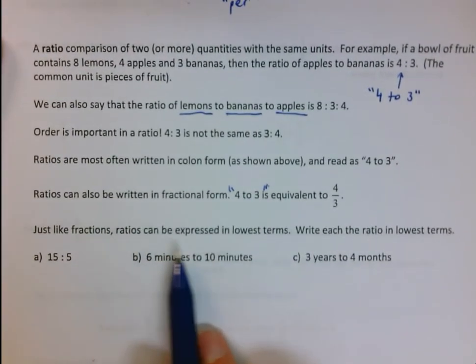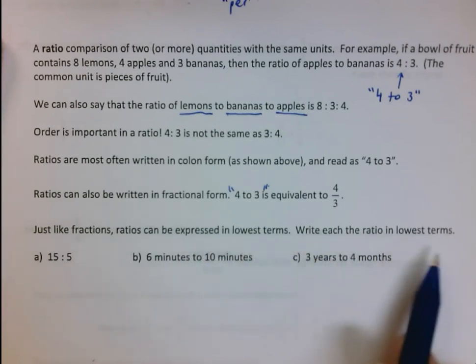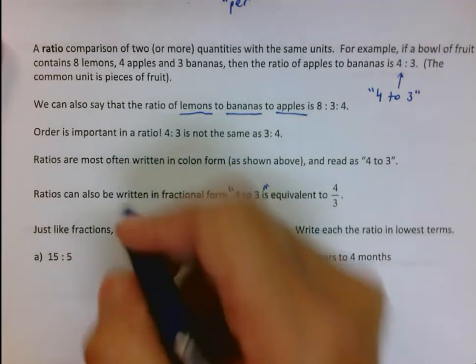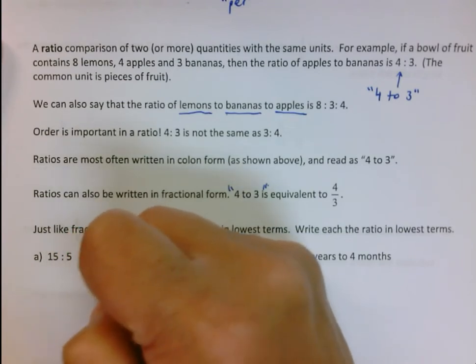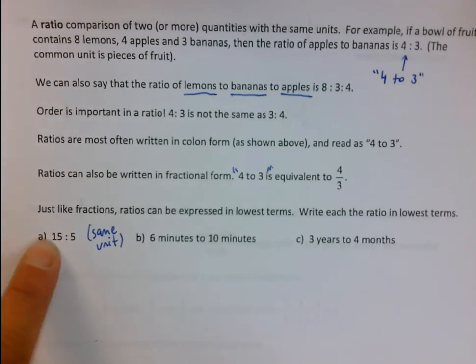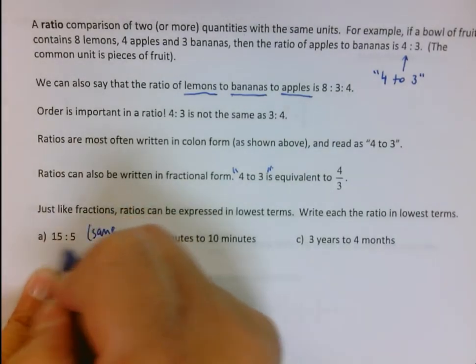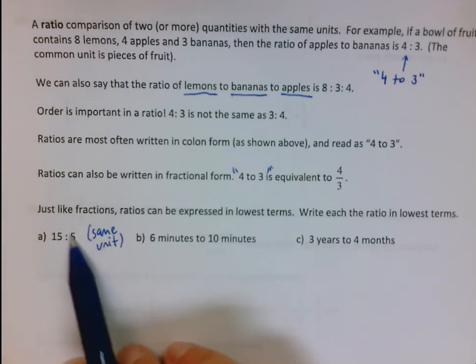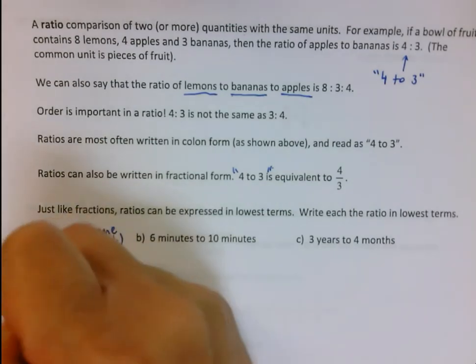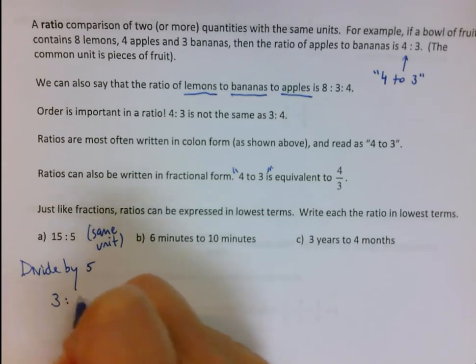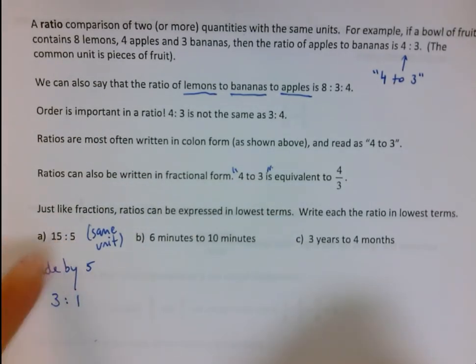Just like fractions, ratios can be expressed in lowest terms. Write each ratio in lowest terms. 15 minutes to five minutes, same unit, so I can write it as a ratio. I can reduce both of these numbers by dividing both of them by five. That's going to be an equivalent ratio. So 15 to five can be reduced to three to one.